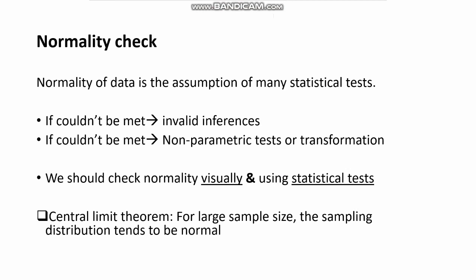If the normality assumption couldn't be met, you should either use transformations, such as log transformation or square root transformation, that may lead to normality. Otherwise, you have to use nonparametric alternatives, which is the topic for the next video. In this video, we will learn how we can check normality assumption in R using visual techniques and also statistical tests. Keep in mind that you should confirm normality using multiple tests, since each technique has its own limitations.